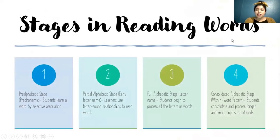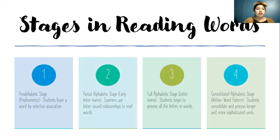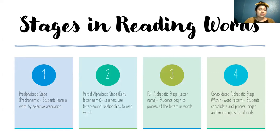One part I found interesting was the stages in reading words. The first is the pre-alphabetic stage, where students learn a word by selective association. For example, the word elephant — because of the length of the word, they will recognize it. Or when they see the word 'look,' they see the O's and think those look like eyes, so it must be 'look.' They associate words with something visual.